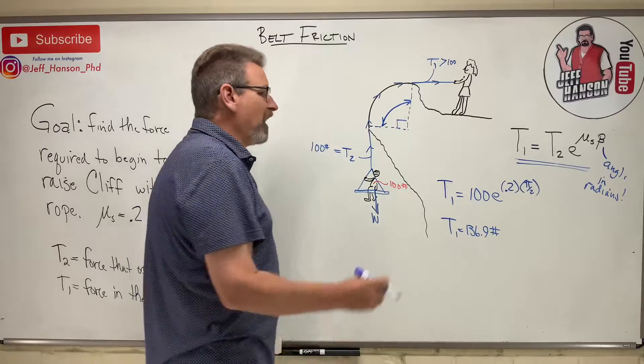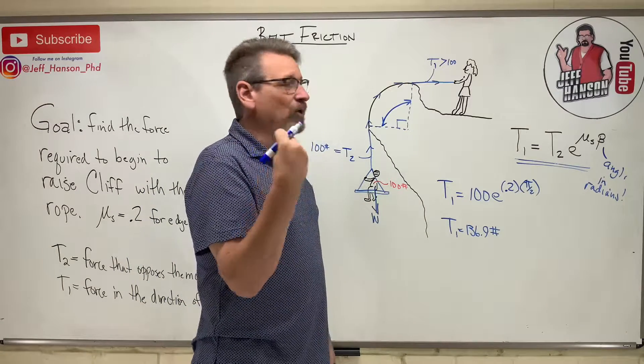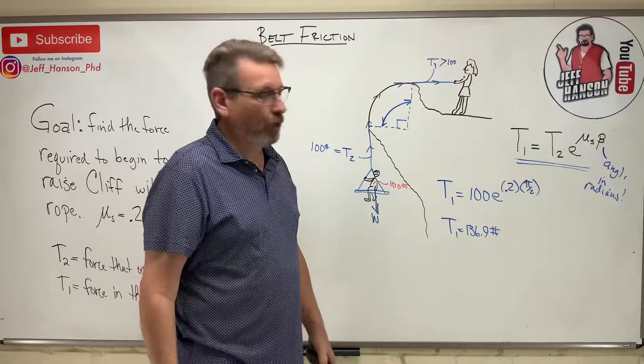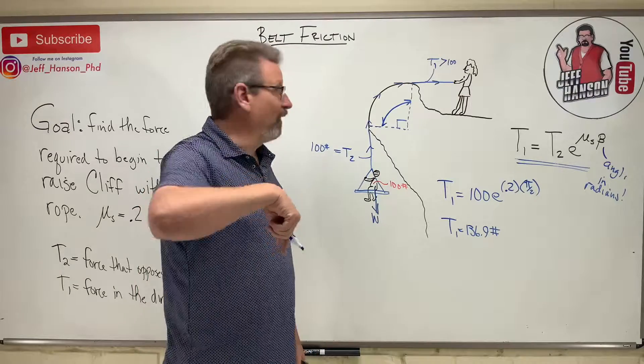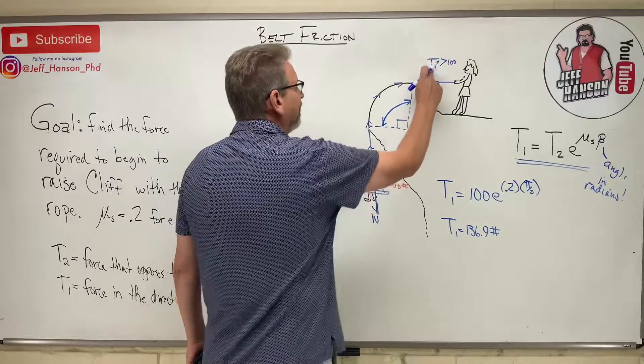So what if I turn this around on you? Just before Cliff starts to be lowered, or in order for Esmeralda to hold Cliff in equilibrium, how much weight does she have to hold on the rope? Well now the motion wants to go the other way, so the only thing that changes is now Cliff is going to be T1 and Esmeralda is going to be T2.